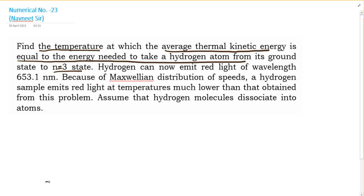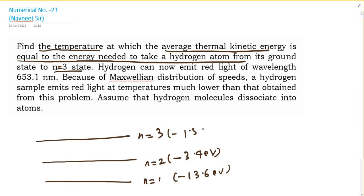The energy levels are: ground state n equals 1 is minus 13.6 electron volts, n equals 2 is minus 3.4 electron volts, and n equals 3 is minus 1.5 electron volts.